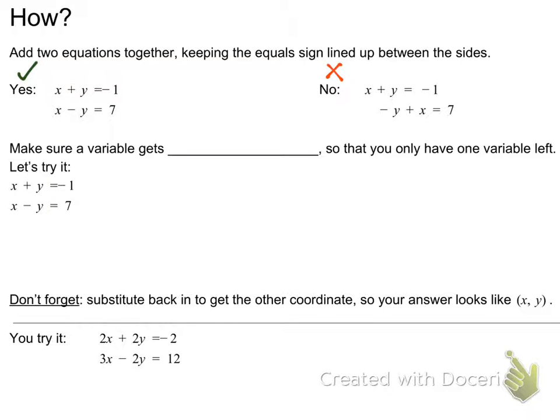Next thing you want to make sure of is make sure that a variable gets eliminated. That's why we call it elimination, so that you have only one variable left. If you look at these, we could solve this equation if it only had x or only had y. That's the whole goal. So when you add these together, you get x plus x becomes 2x. y plus negative y is zero. We can cross those out because they add up to zero. And on the right side you get negative 1 plus 7, which is 6. And it becomes a much easier problem to solve. 2x equals 6.